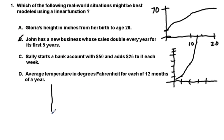C, Sally starts with a bank account with $50 and adds $25 to it each week. So Sally starts out at week zero with $50, adds $25 next week to be $75. You're going to have that continuing pattern. It's going to be a linear one. That's going to be best.